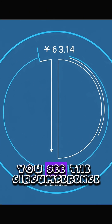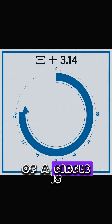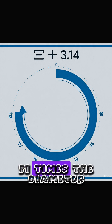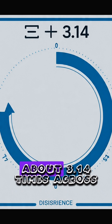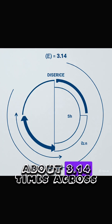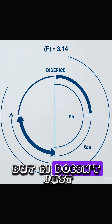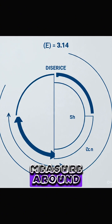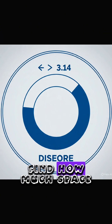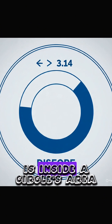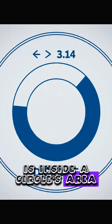You see, the circumference of a circle is pi times the diameter. In simple terms, that's about 3.14 times across. But pi doesn't just measure around — it also helps us find how much space is inside: a circle's area.